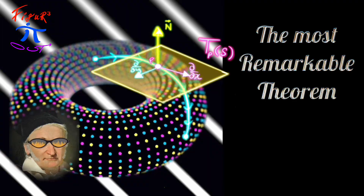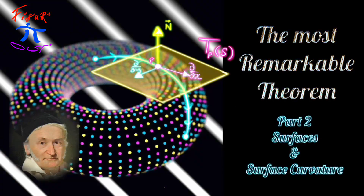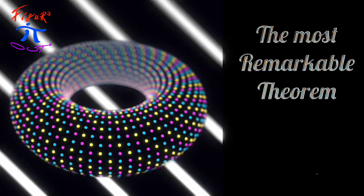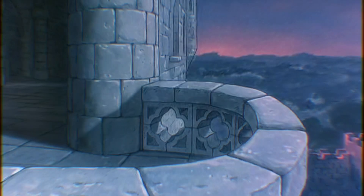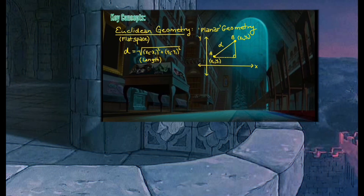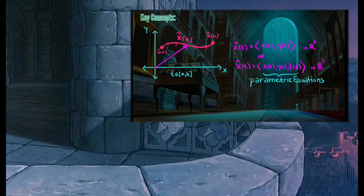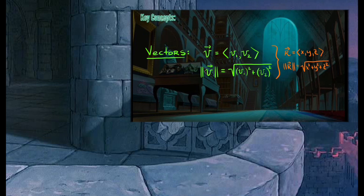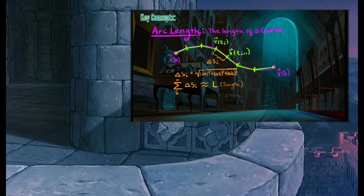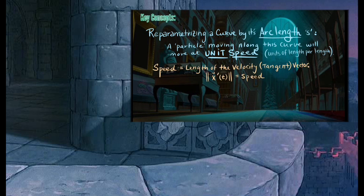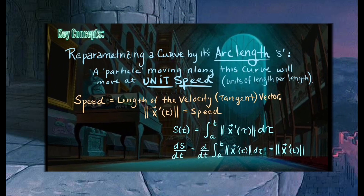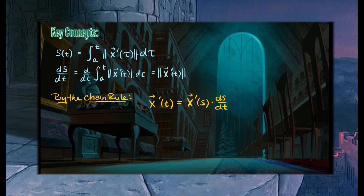The most remarkable theorem, Part Two: surfaces and surface curvature. In Part One we spent a lot of time talking about curves and curvature. We described curves using vectors given by parametric equations, discussed the importance of the length of a vector, and how the length of a curve could be approximated by adding up the lengths of vectors along the curve.